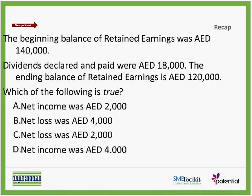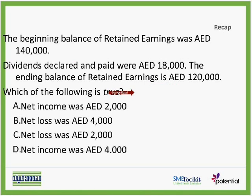The beginning balance of retained earnings was $140,000. Dividends declared and paid were $18,000. The ending balance of retained earnings is $120,000. Which of the following is true? We are asking about net income, net loss, or net income and net loss.